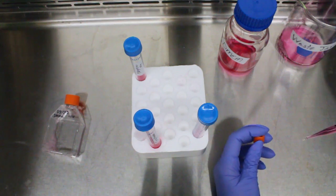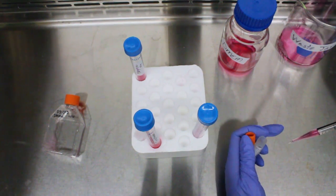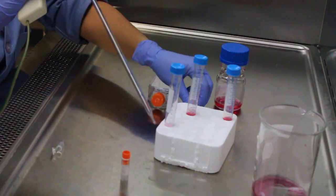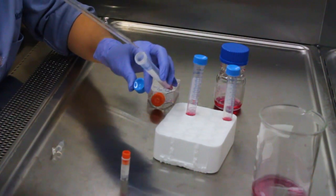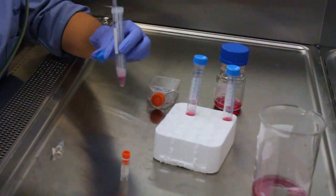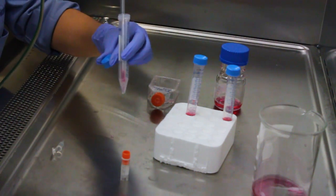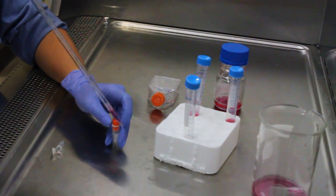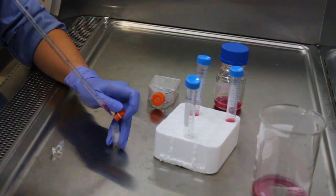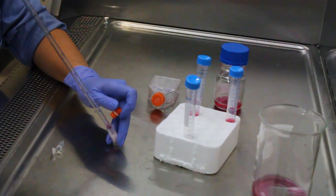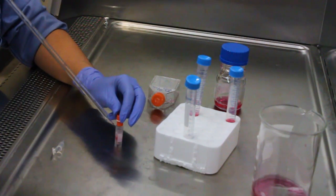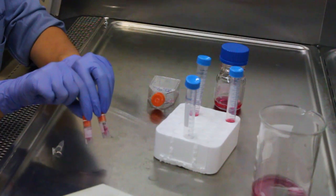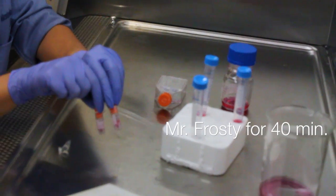Grab 0.5 milliliters of the sample and place it into the first cryo vial. Do the same for the second cryo vial. We are splitting into two cryo vials because the 3T3 cell line proliferates very quickly, and this allows the cells enough space to grow when they are plated next. Now we have our two cryo vials that are ready for freezing, but first place them in Mr. Frosty for 40 minutes.